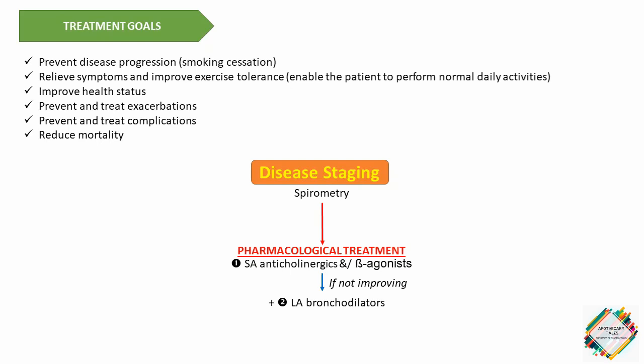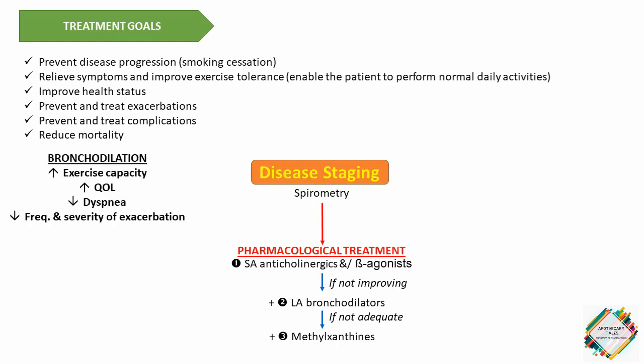Long-acting bronchodilators such as salmeterol, formoterol, tiotropium, and theophyllin are added to the short-acting agents. Methylxanthines are usually added when the response to other agents is inadequate. Along with bronchodilation, these agents increase exercise capacity, improve quality of life, decrease dyspnea, and decrease the frequency and severity of exacerbations — especially tiotropium. A recently approved agent, roflumilast, is a selective PDE4 inhibitor indicated to decrease COPD exacerbations in certain patients. Bronchodilators are the most important therapy for symptoms in COPD.